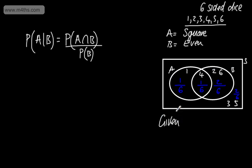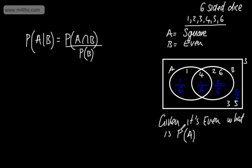Given that this is an even number, what is the probability that it's a square number? Without using the formula: the probability of B is 3 out of 6. If it's even, what is the probability that it's square? There's only one square number out of a total of 3 even numbers, so the probability of A given B is 1 out of 3.